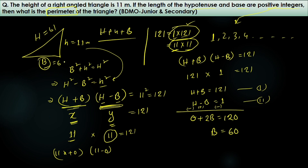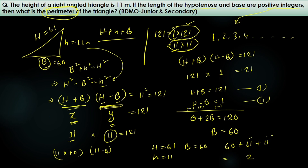Now we can find the perimeter. Hypotenuse = 61, height = 11, base = 60. Total perimeter = 60 + 61 + 11 = 132 meters. So the perimeter of the triangle is 132 meters.